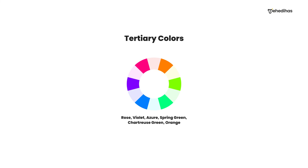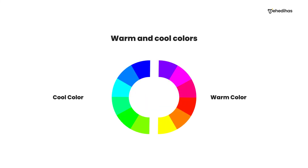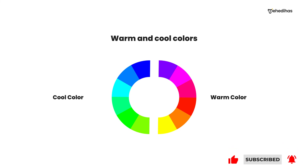We have two different color groups: warm colors and cool colors. Cool colors include blue and green on one side. Warm colors are very vibrant. These two groups of colors are quite different from each other.